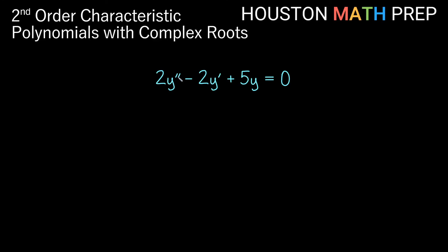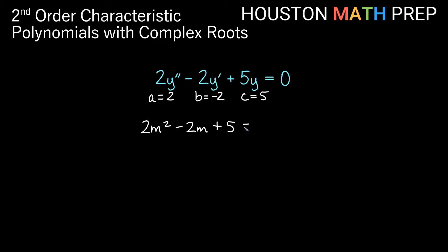Looking at our last example: 2y double prime minus 2y prime plus 5y equals zero. Very similar to our first one but with a equals 2. So a equals 2, b is negative 2, and c is 5. Our characteristic polynomial is 2m squared minus 2m plus 5 equals zero. This doesn't factor, so we use the quadratic formula: m equals negative b, which is 2, plus or minus the square root of b squared — which is 4 — minus 4 times a times c, which is 4 times 2 times 5, giving 40, all over 2a, which is 4.